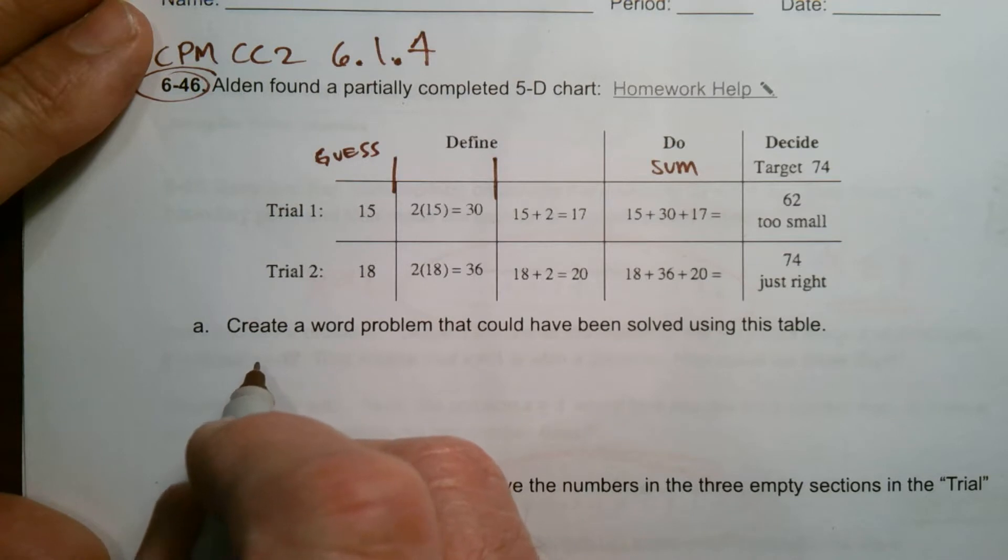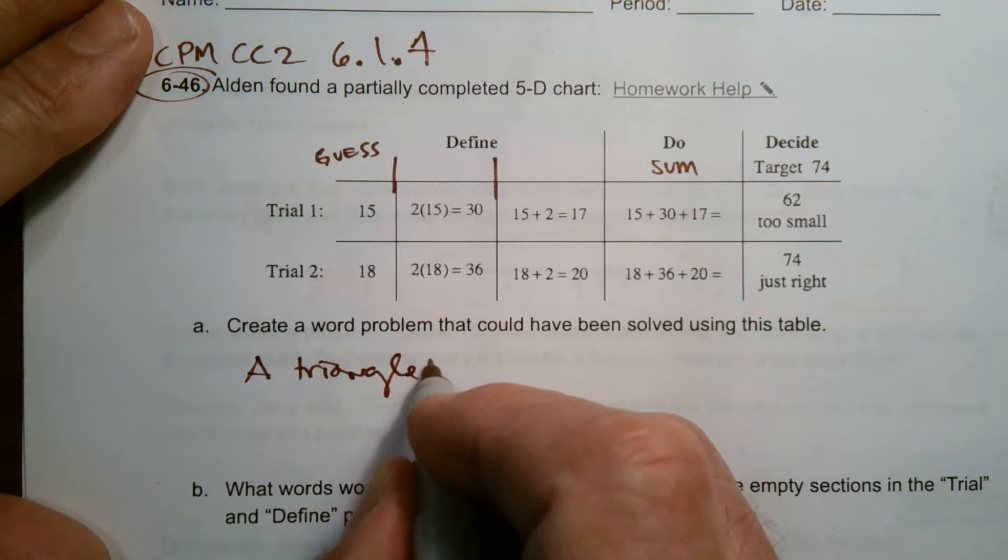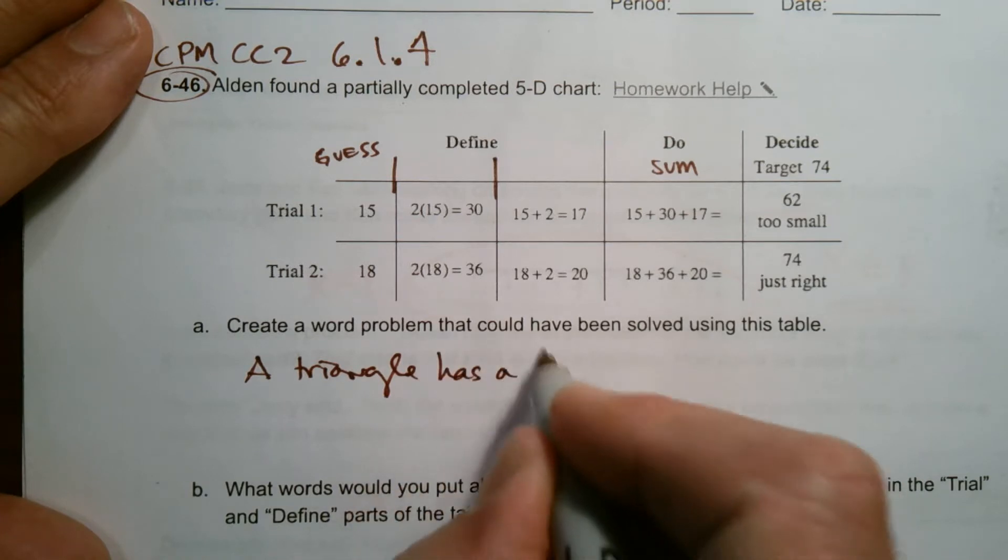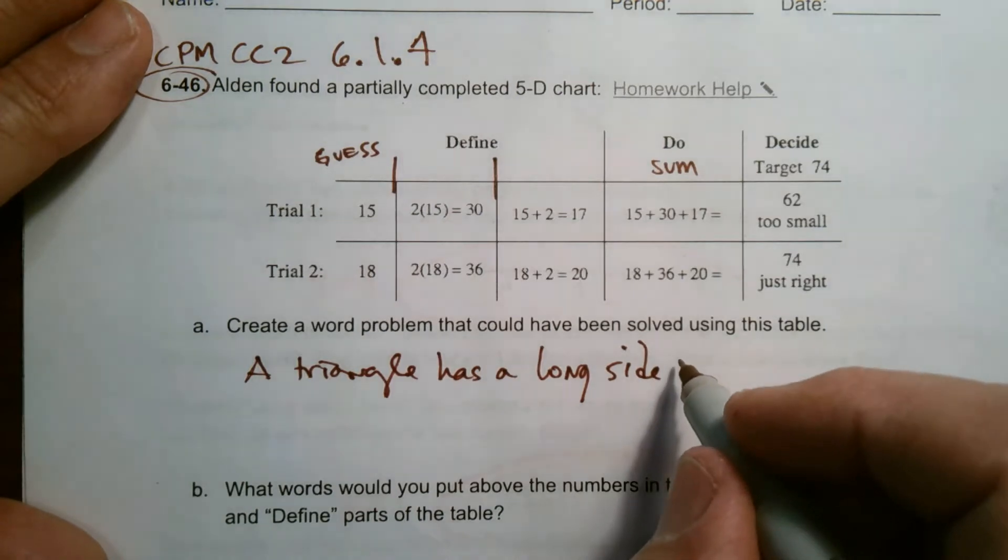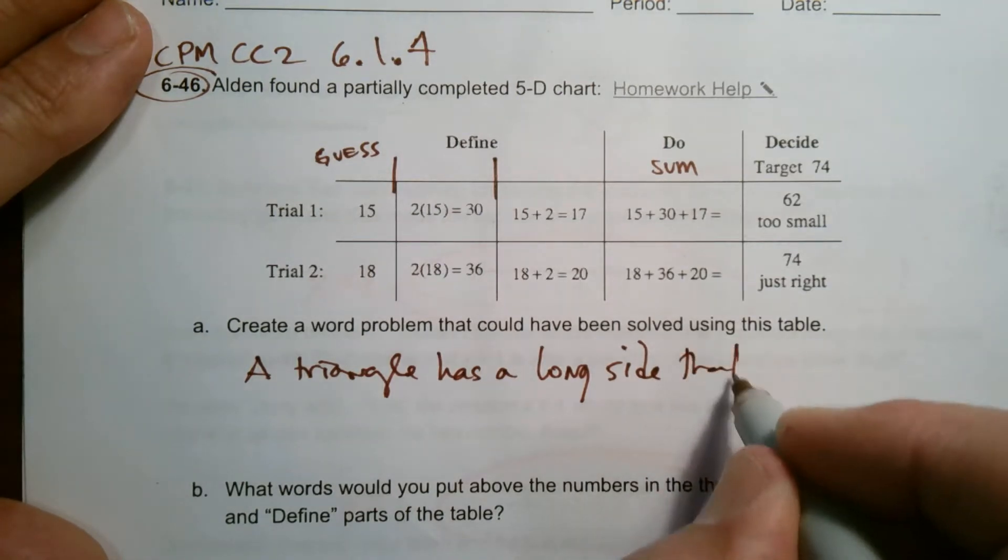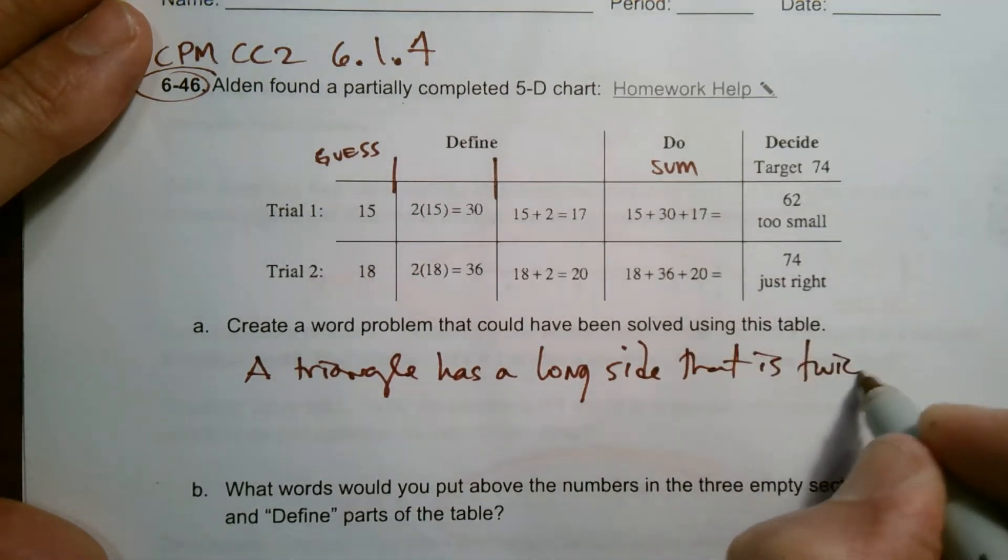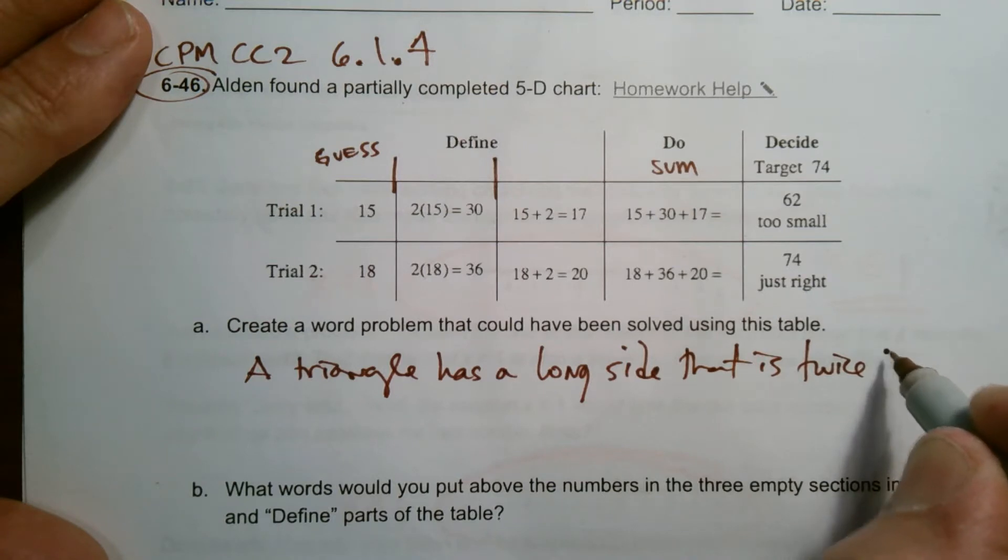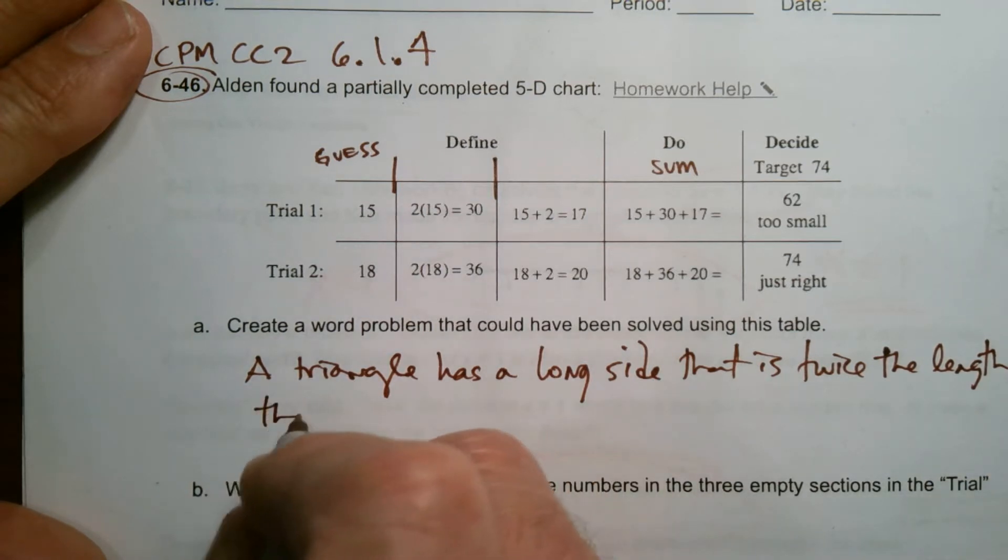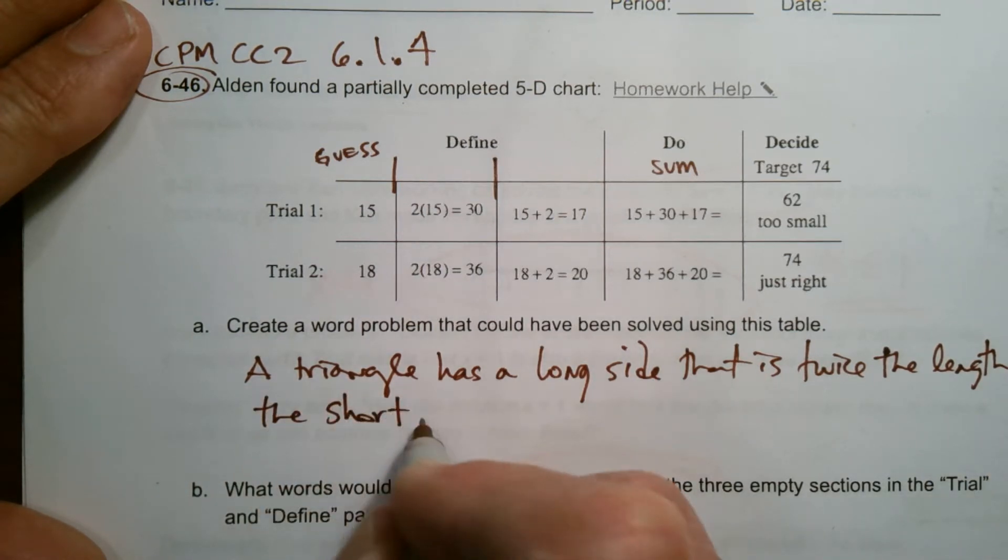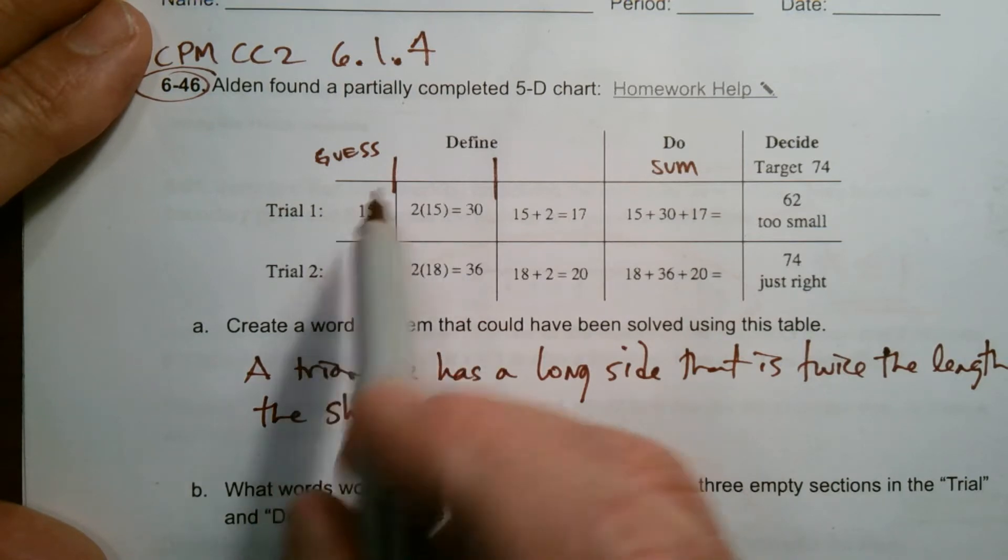So I'll say, a triangle has a long side that is twice the length of the short side. So what did I just describe?